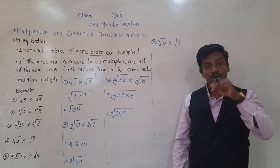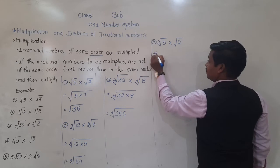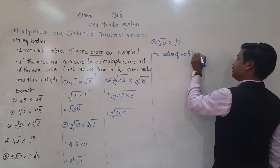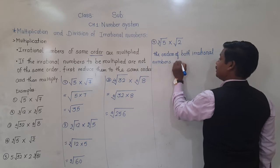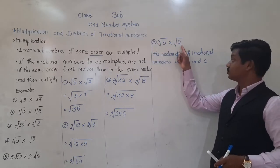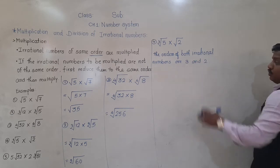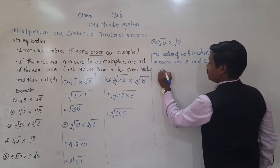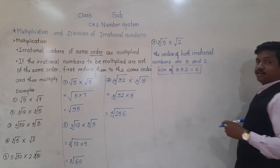What we have to do first — we have to make the order same. How to make the order same? By finding the LCM of the orders. The orders of both irrational numbers are 3 and 2. So to make the order equal we have to find the LCM of 3 and 2, which is 6. That means we have to make the order equal to 6.